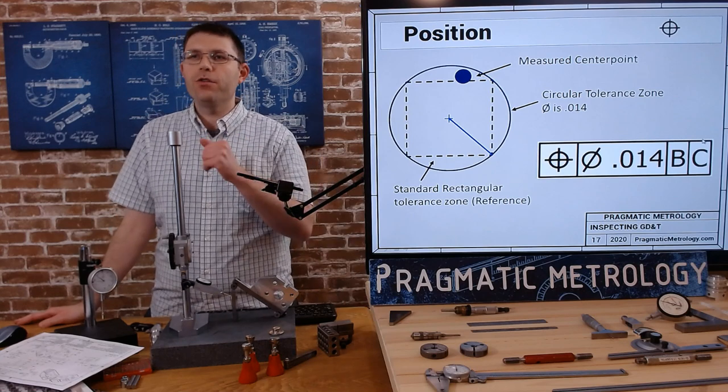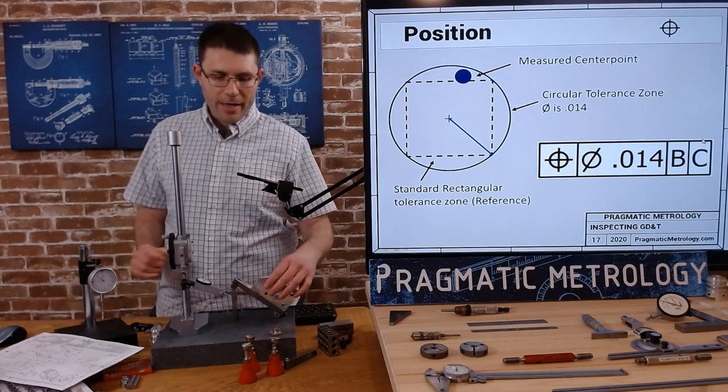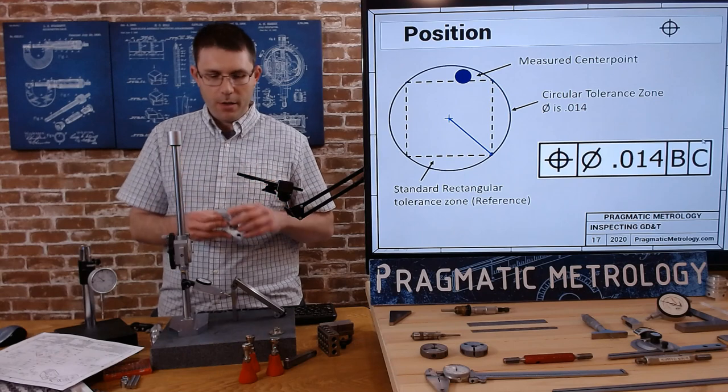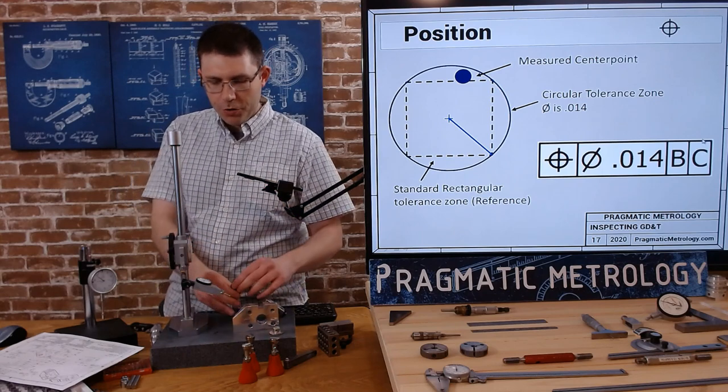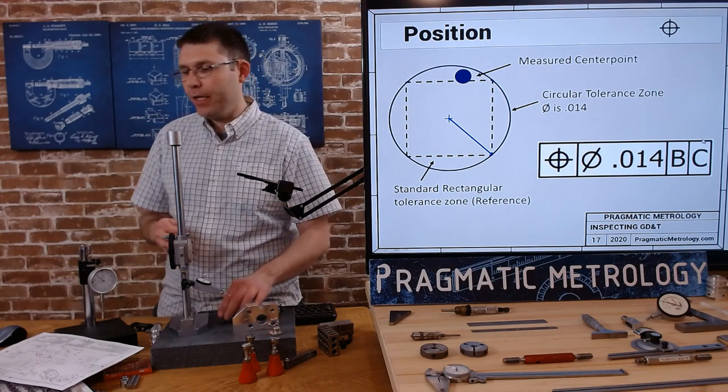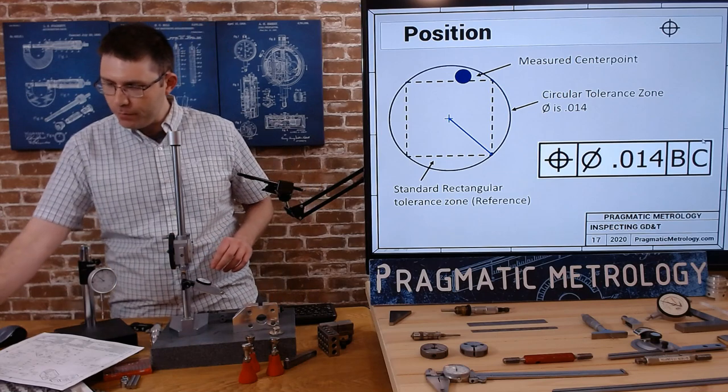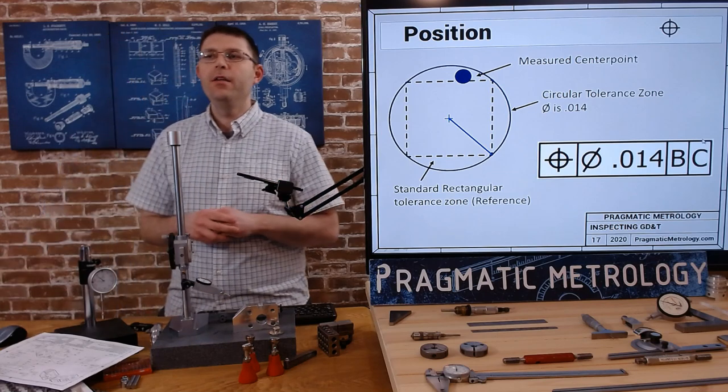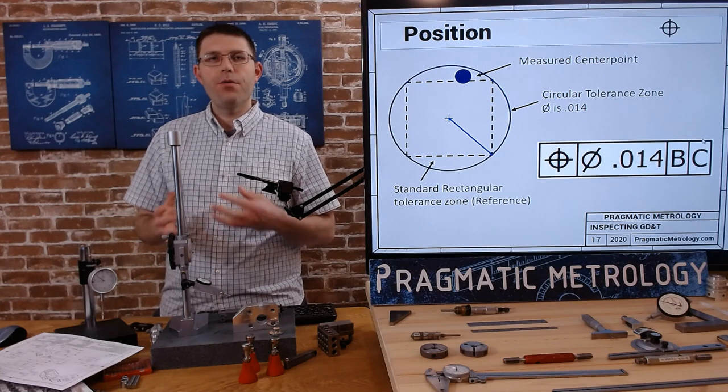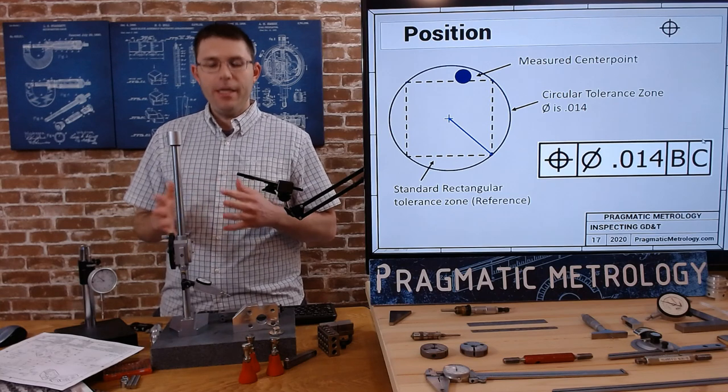So you might see C, A, B or C, D, A or whatever. I've seen it a few times, not terribly often, but it was on those more complex callouts. So don't be surprised if you see that, just follow what the feature control frame says. That goes into setting up your block using the high points of the surface plate and the angle blocks, the three-two-one setup.